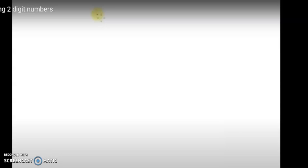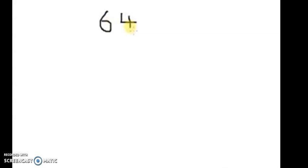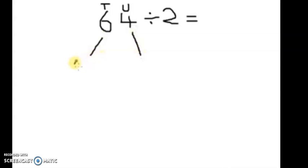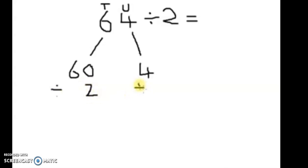We are going to start with a number like 64. So let me write 64. Now, after writing 64, we are going to divide it by two. When you're dividing by two it means you are partitioning — you are finding half of a number. Half means you are cutting into two parts. So we have our tens and our ones, which are units. Six tens is 60, then four ones is four. So: 60 divide by two, then four divide by two.